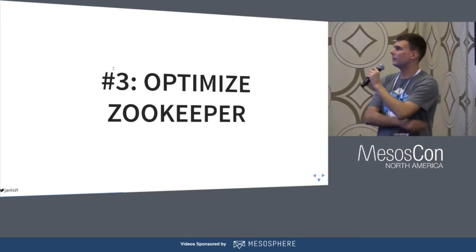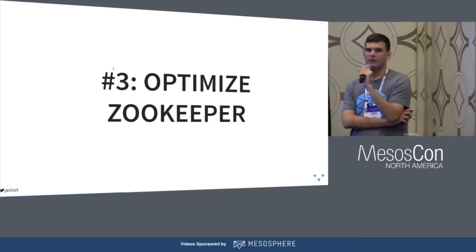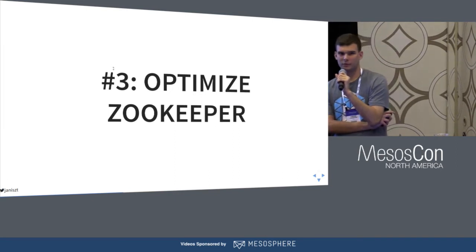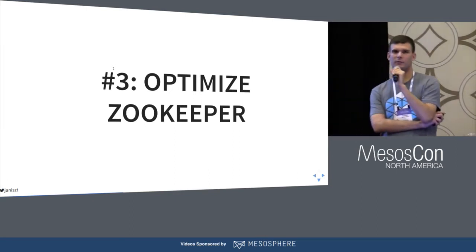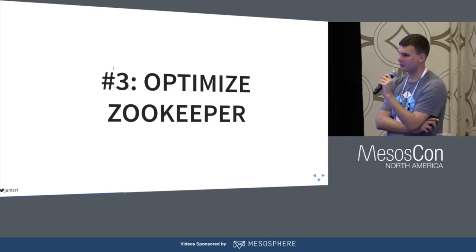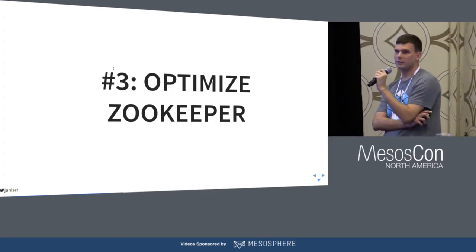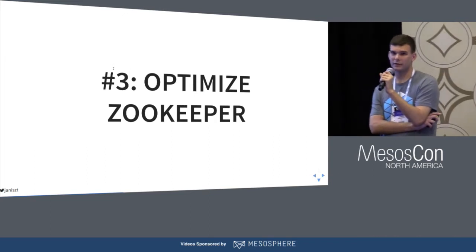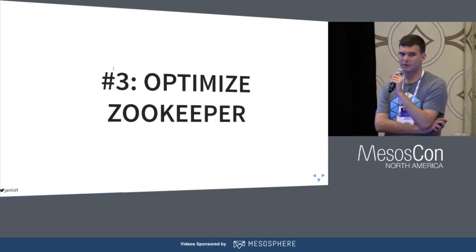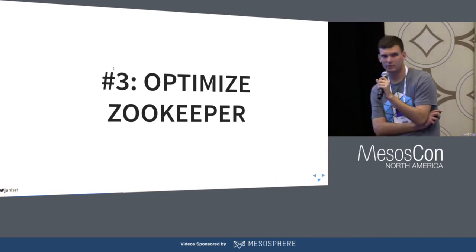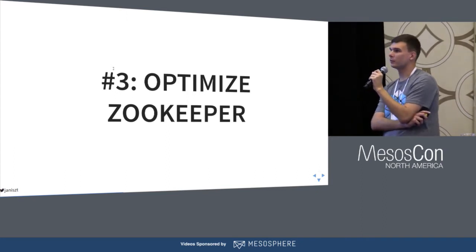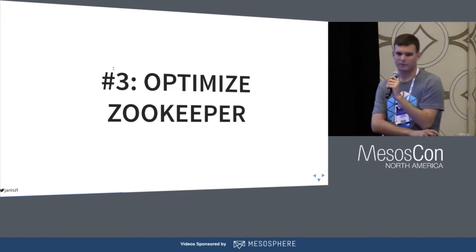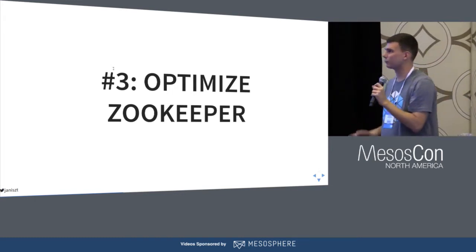Next: ZooKeeper. Marathon uses ZooKeeper from the beginning as a state store — not only for leader election, but all state of the Marathon application is kept in ZooKeeper. ZooKeeper used to have a flat layout where everything was written in one branch. From 1.4, they switched to a nested layout with separated branches for deployments, apps, tasks, and groups.